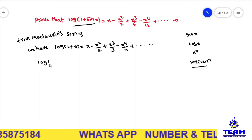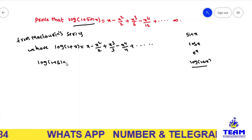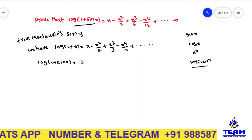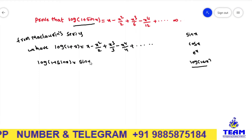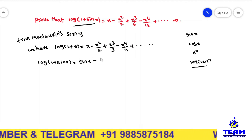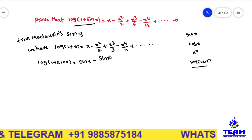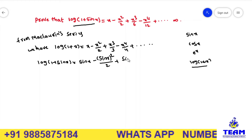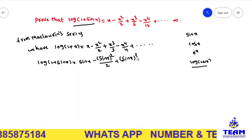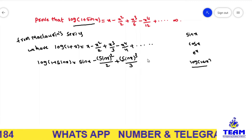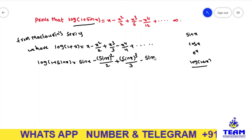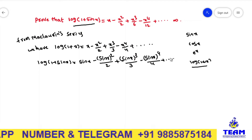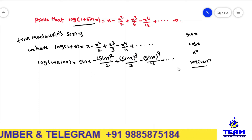In place of x I am substituting sin x. Then log of 1 plus sin x is equal to: in place of x write sin x, so sin x minus sin x whole squared by 2 plus sin x whole cubed by 3 minus sin x whole to the power of 4 by 4 plus so on.